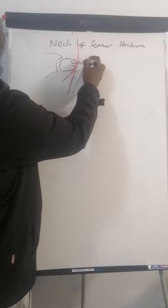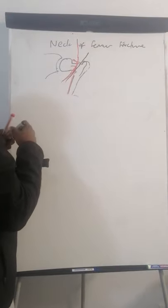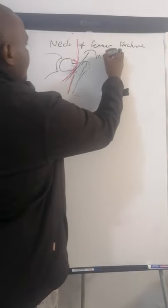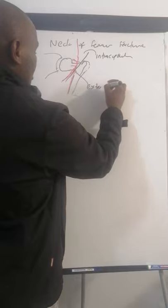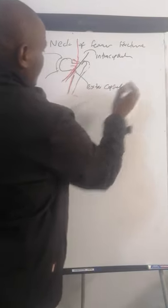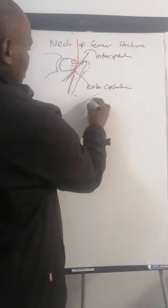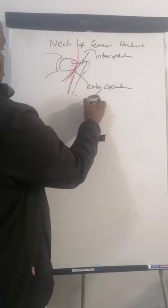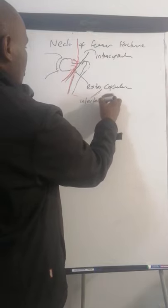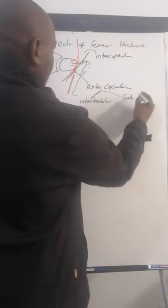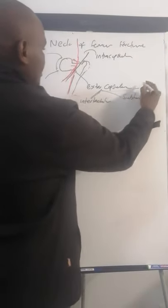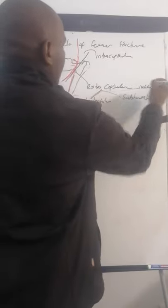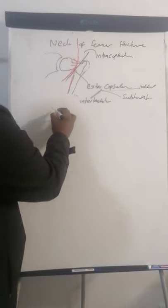Neck of femur fractures are divided into two types: they can either be intracapsular or extracapsular. Extracapsular fractures include your intertrochanteric fracture, your subtrochanteric fracture, and also isolated trochanteric fractures.